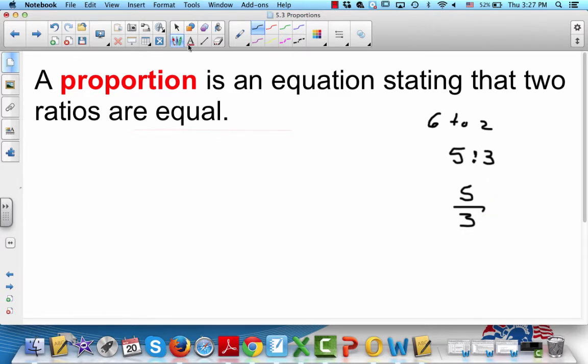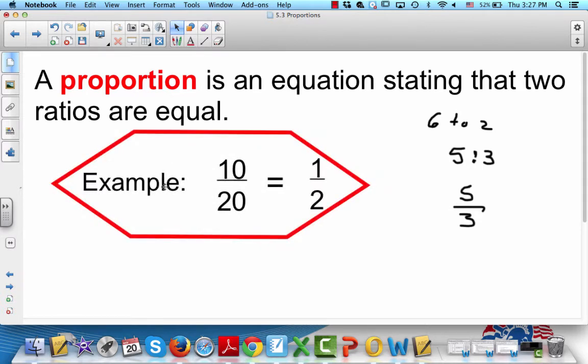Now you're going to be able to write proportions, and proportions mean that two ratios are equal. The ratios have to be equal for it to be a proportion. So here's an example: 10 over 20 is equal to 1 over 2. 10 over 20 equals a half, and this is equal to a half, so you can see that these two are equal.